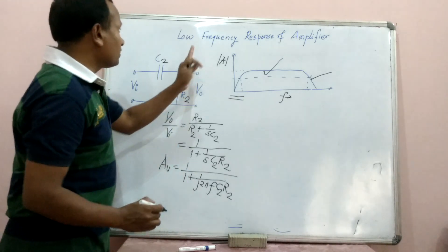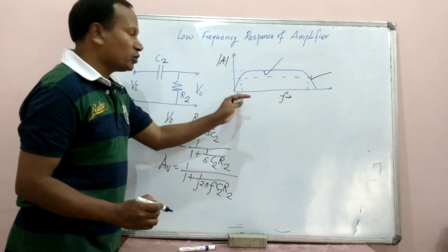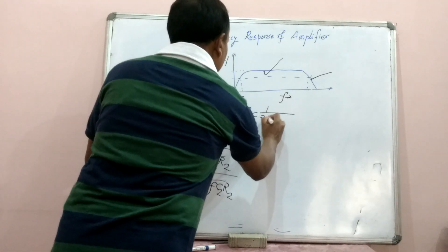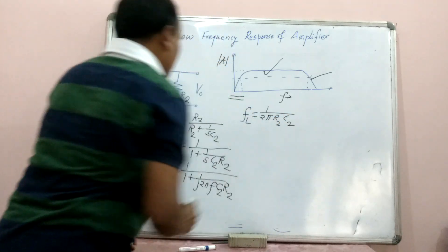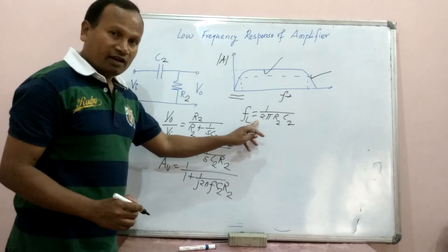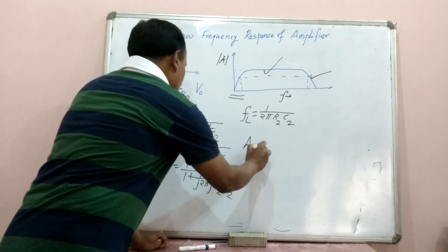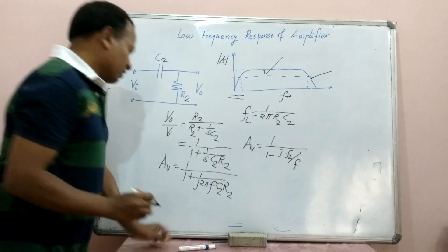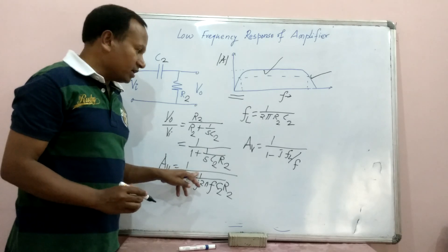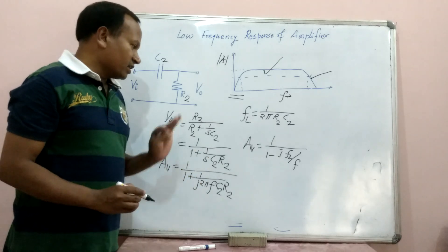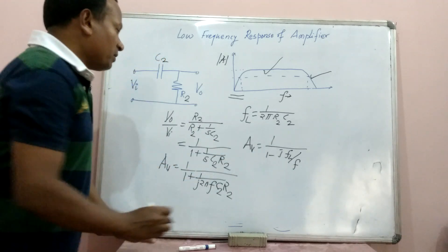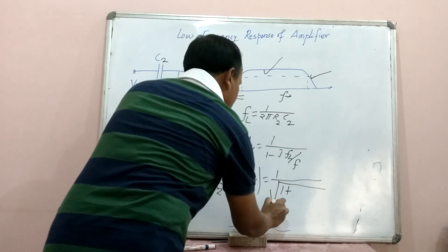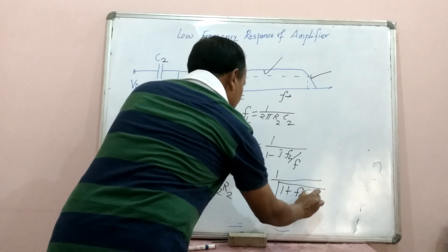Since this is a low frequency response, the cutoff frequency will be towards the low frequency side. We define FL as the 3 dB cutoff frequency: FL = 1 upon 2π·R2·C2. Substituting this, the magnitude can be written as 1 upon 1 minus j·FL divided by F, which gives magnitude equal to 1 upon square root of 1 plus (FL/F) squared.